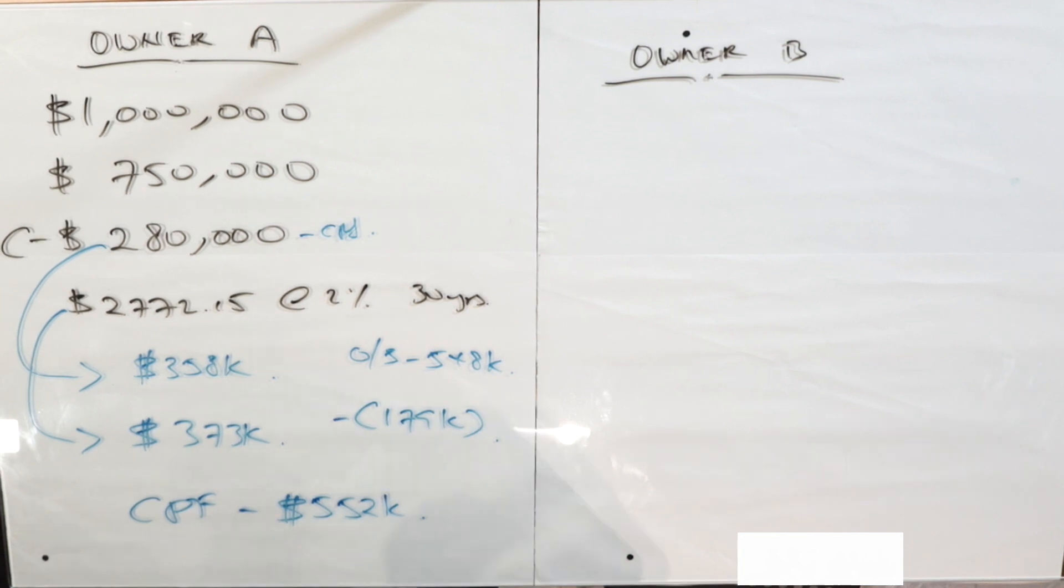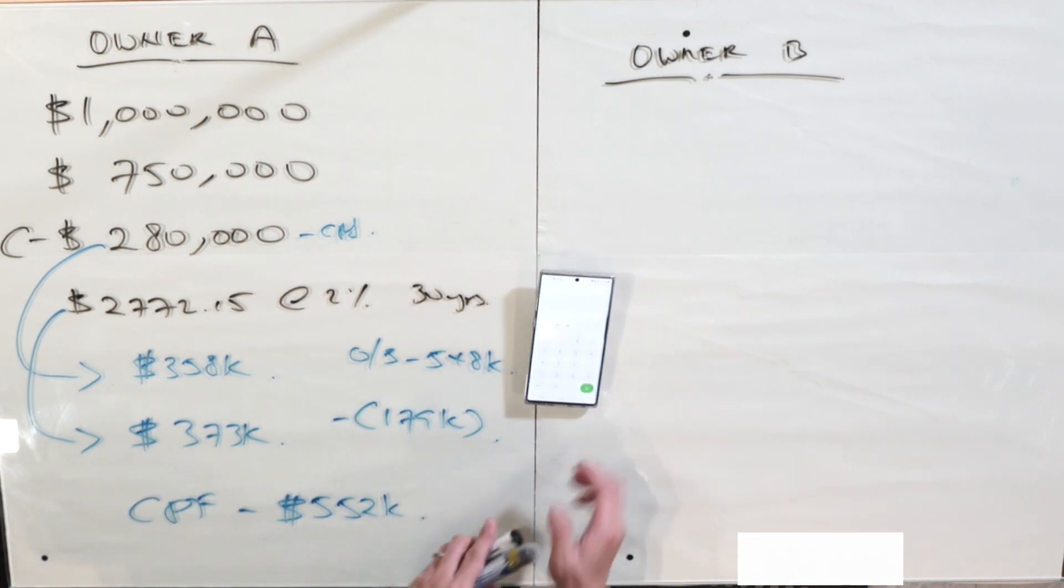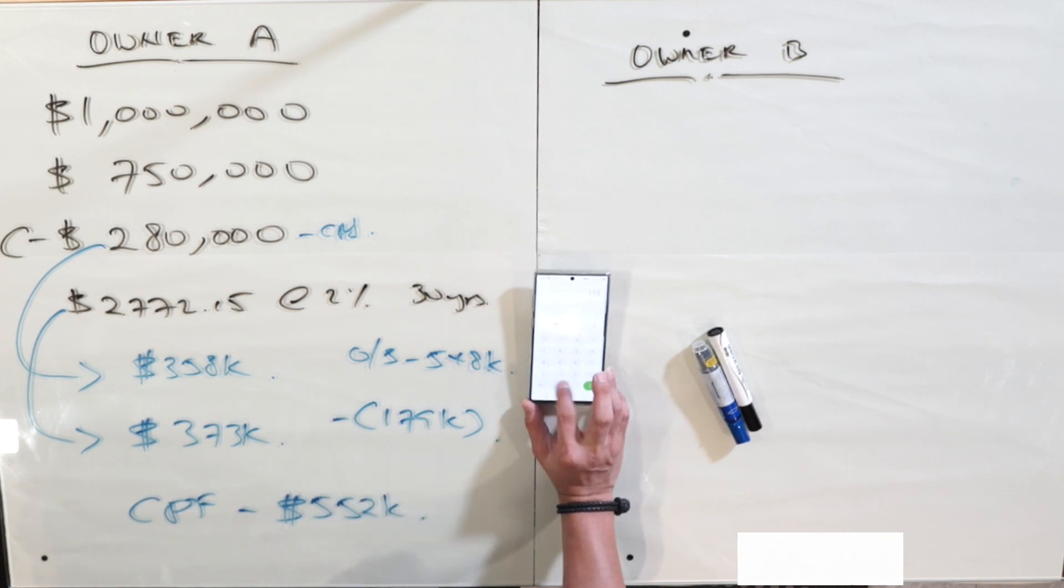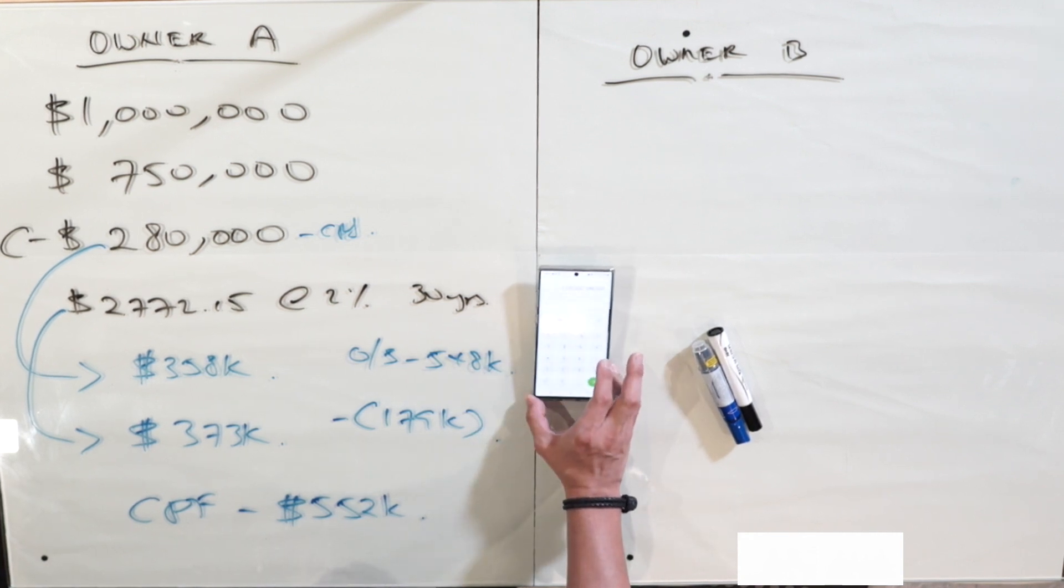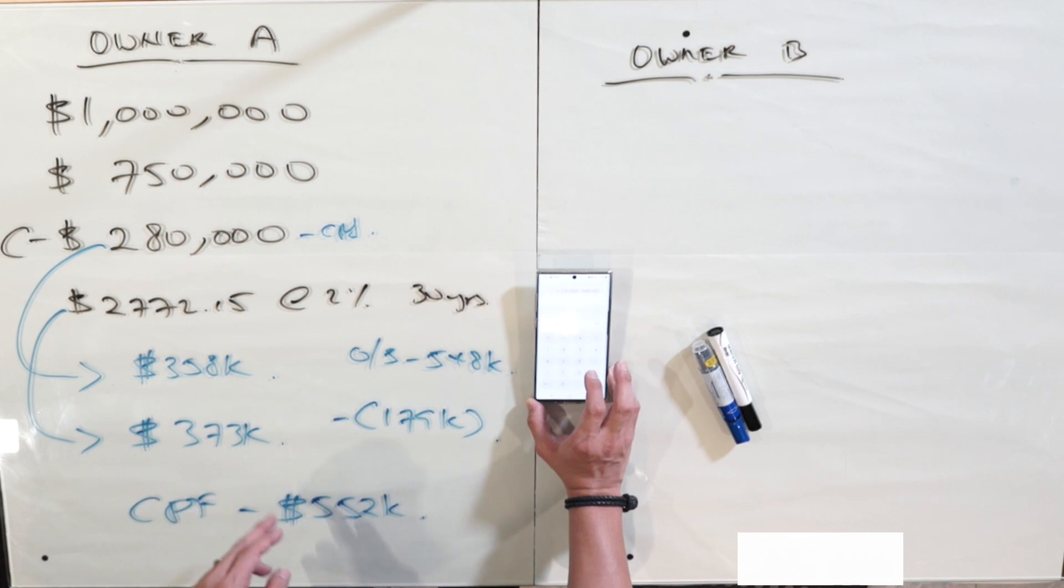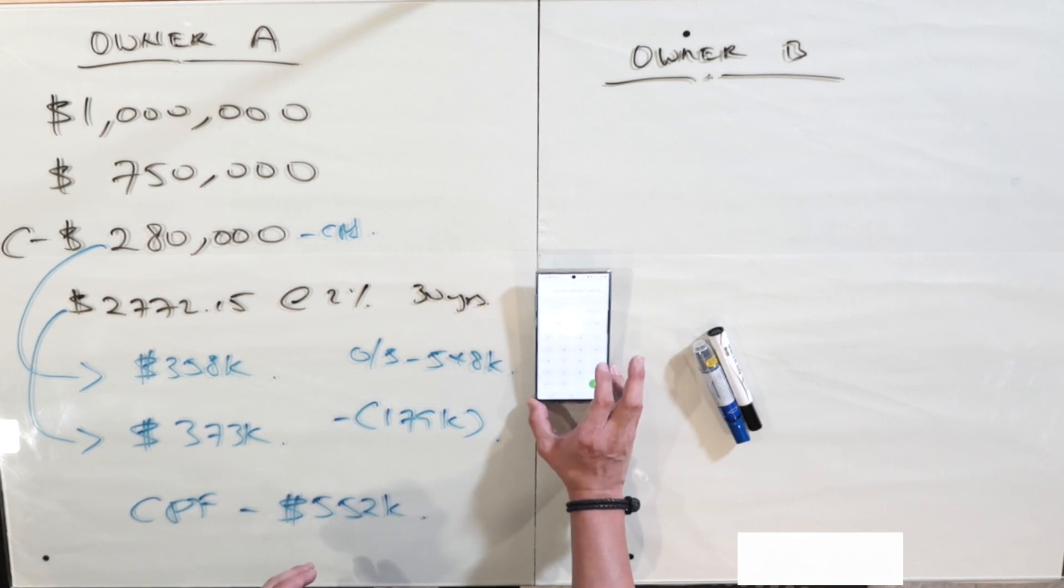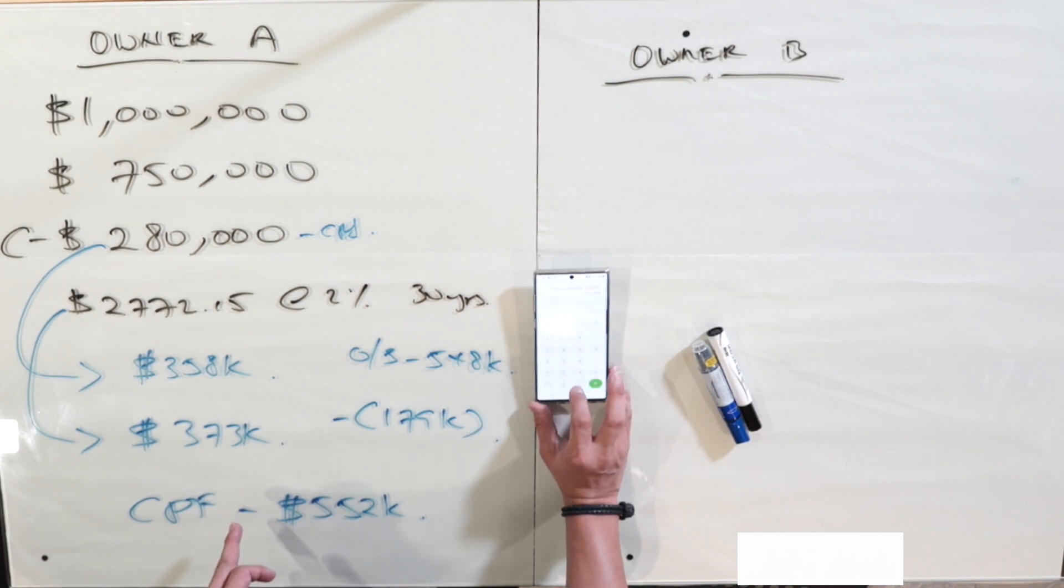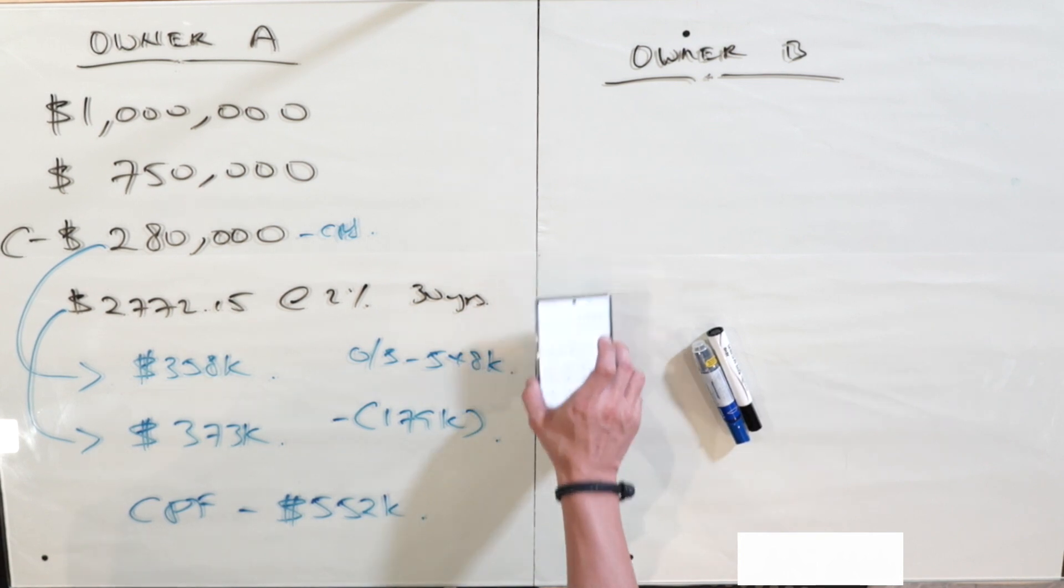Let's calculate these figures. You will sell at $1.1 million. First, you have to less off the outstanding loan of $548,000, minus off the CPF of $358,000, and minus off the other CPF which is $373,000. And this is what you will get: negative $179,000. So this is for owner A.